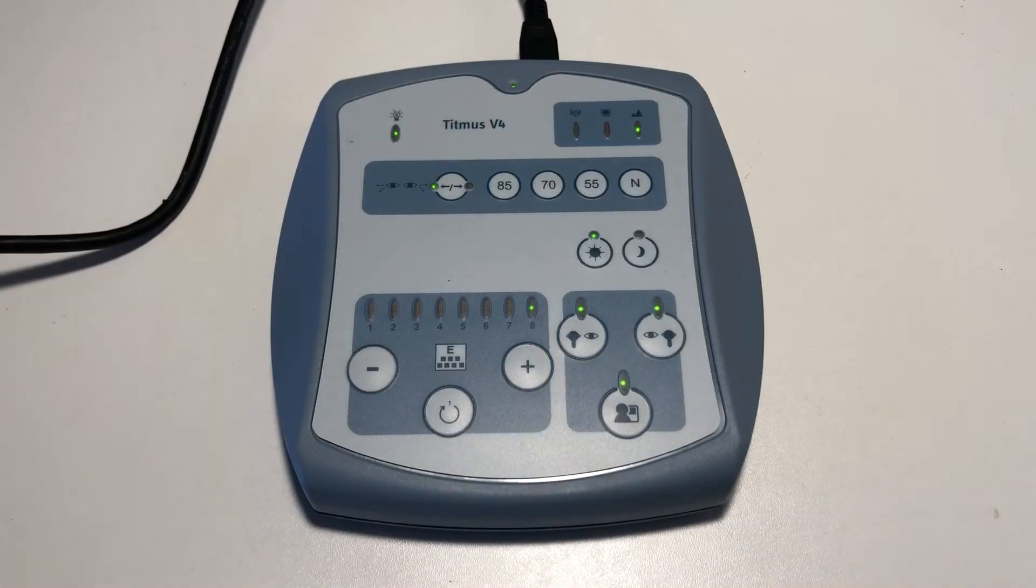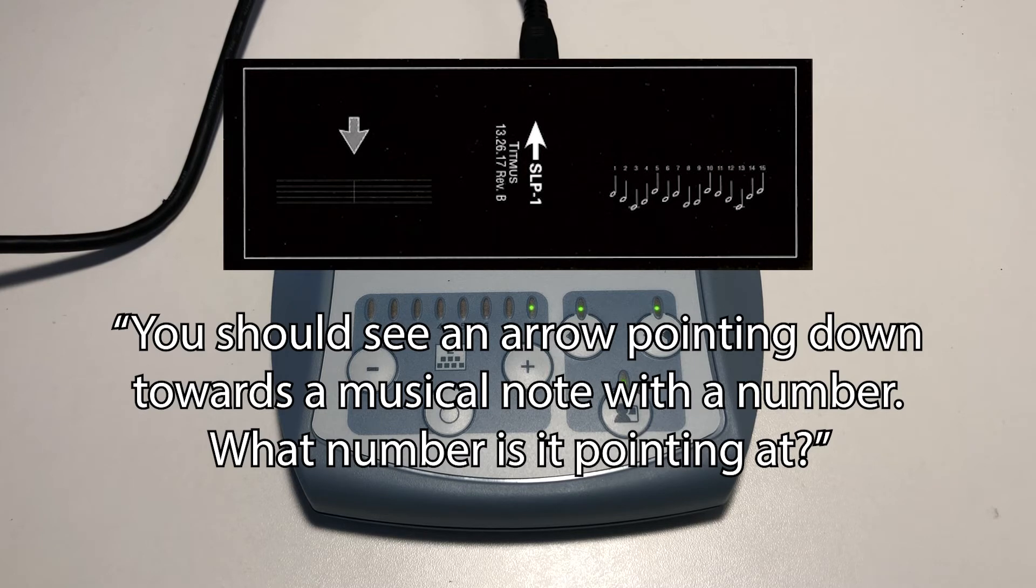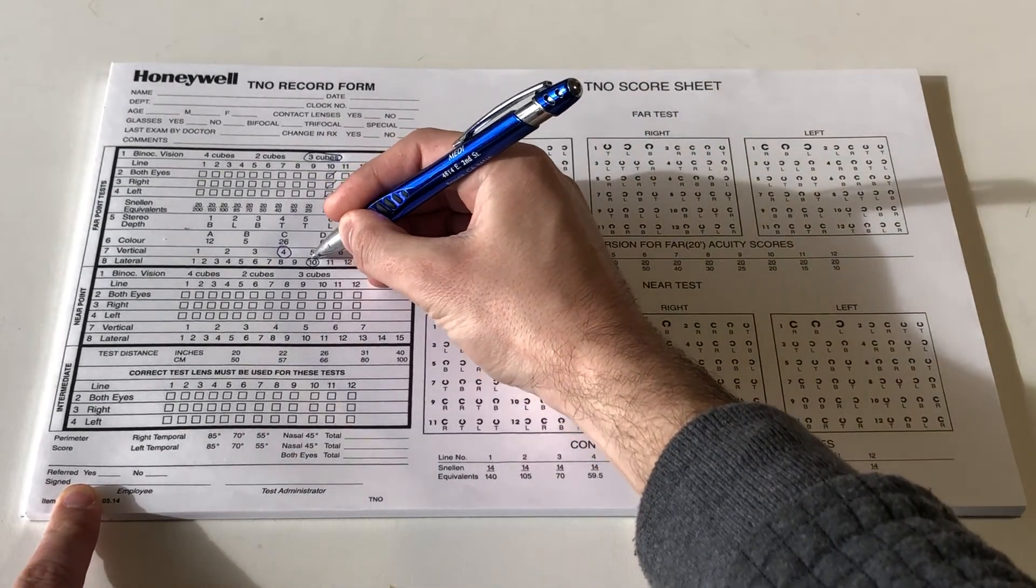Advance to slide number eight. This slide tests for horizontal foria. Say to the patient, you should see an arrow pointing downwards to a musical note with a number. Tell me what number it's pointing at. Record the number on the record form.